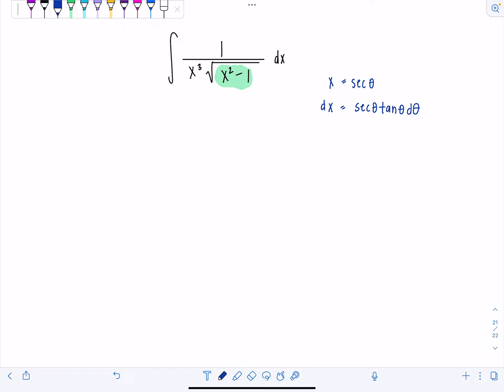So now let's go ahead and rewrite our integral in terms of theta. So dx is going to get replaced with secant theta, tan theta, d theta. In the denominator we have x cubed, so that's secant cubed theta. And then now I have square root of secant squared theta minus 1.